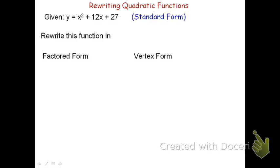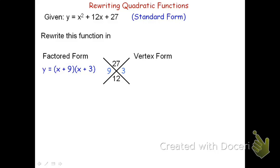In order to factor a trinomial, we're going to try using a diamond problem, provided it's a 1x squared — in this case it is. The top number, the product, is found by the constant or c value of the trinomial. The bottom, the sum, is found by the b term. I'm looking for two numbers that multiply to be 27 and add to be 12. Going through combinations: 9 times 3 is 27 and 9 plus 3 is 12. Since it's a 1x squared, the factored form is y equals the quantity x plus 9 times quantity x plus 3.